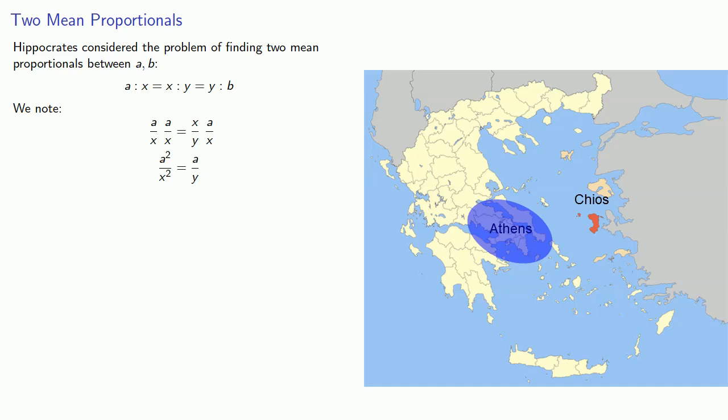But wait, there's more. If we look at the first and third ratios, that says that A over X is equal to Y over B. So this means we can multiply one side by Y over B and the other side by A over X. Then simplify.